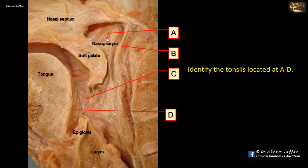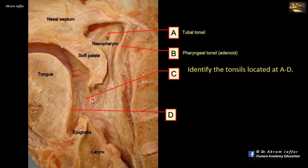At A is the opening of the auditory tube, and the tonsil located here is called the tubal tonsil. B is located at the roof of the nasopharynx, and the tonsil here is the pharyngeal tonsil or the adenoid. C is located in the isthmus of the oropharynx, in the tonsillar fossa between the palatoglossal and palatopharyngeal folds, which contains the palatine tonsil — commonly referred to simply as the tonsil.